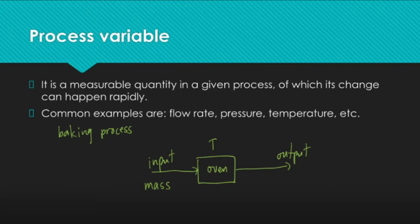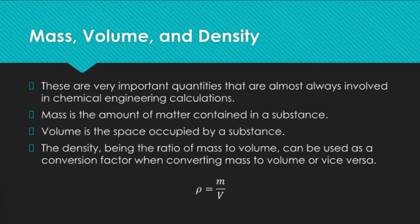Let's take a look at some of the most common process variable examples. First, we have the trio of mass, volume, and density. I have lumped these together because we can convert from mass to volume or vice versa using the value of the density. Density is an intrinsic property of the material, so even if you divide the material into smaller pieces, its density still remains the same. We define mass as the amount of matter contained in a substance. Volume is the space occupied by the substance. And the ratio of mass to volume — that is the density — can be used as a conversion factor when converting from mass to volume or vice versa.